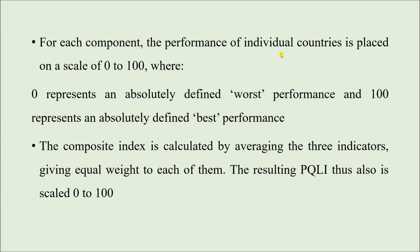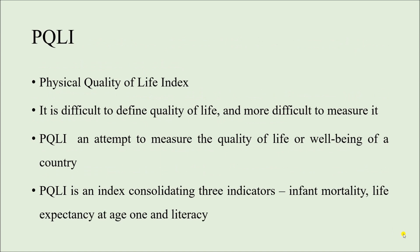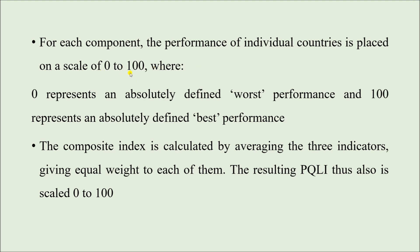For each component, the performance of individual countries is placed on a scale of zero to one hundred. Zero represents the worst possible performance and one hundred represents the best possible performance. So if the infant mortality of a country is very low, the country is expected to have a score close to one hundred — maybe 90 or 95. For a country where infant mortality is very high, the score will be low. Like this, for the three different components we get three different scores ranging from zero to one hundred. We then calculate the PQLI by taking the average or mean value of these three indicators, and that average is the PQLI score of that particular country.